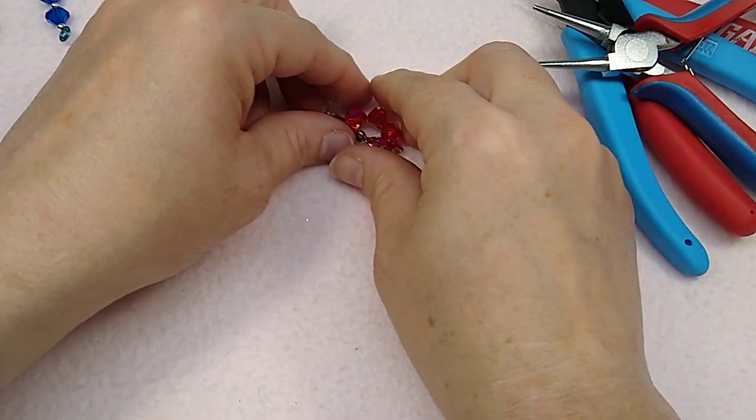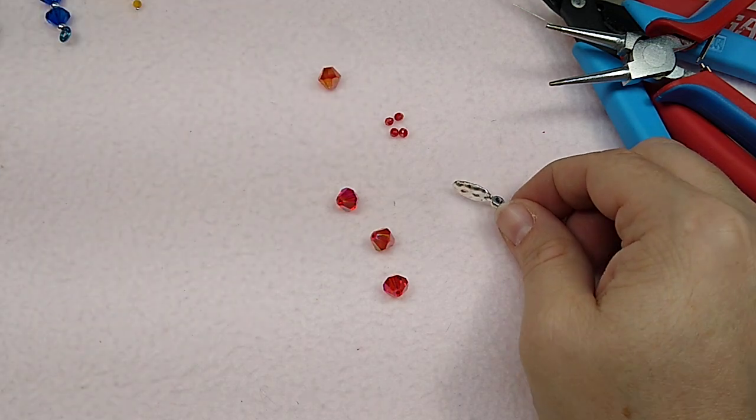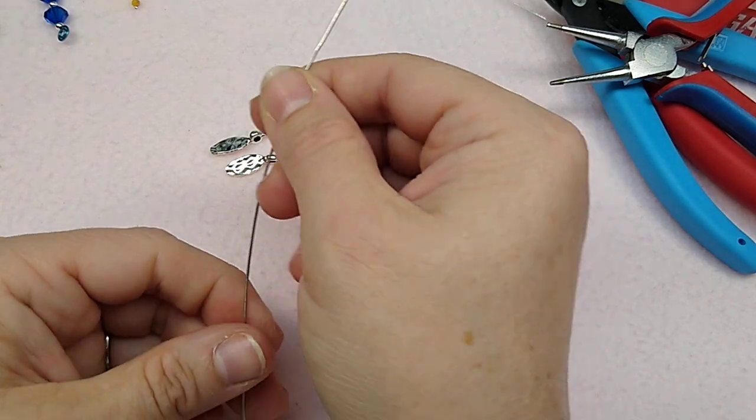So we've got three bicones for the bottom, one for the head, some rondelles, or two wing beads, a bead cap, and some wire.